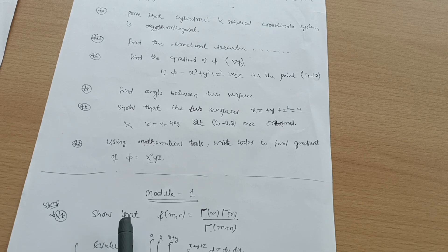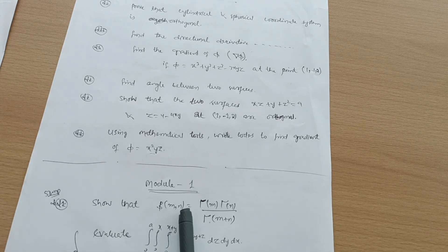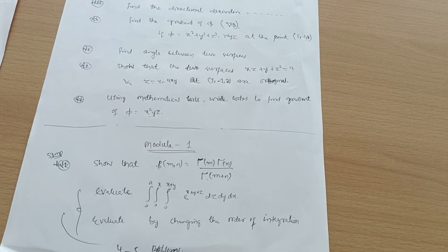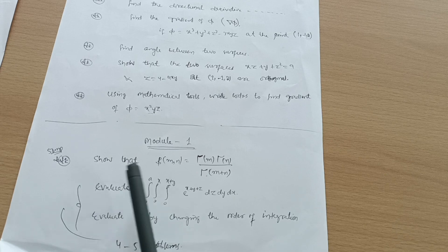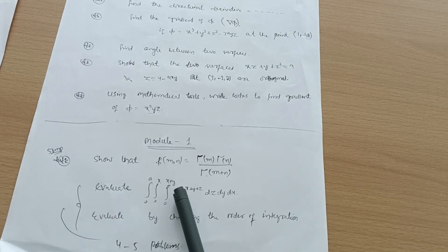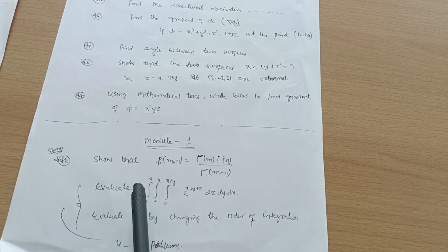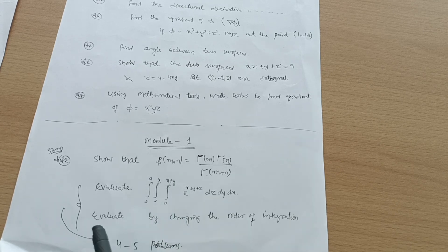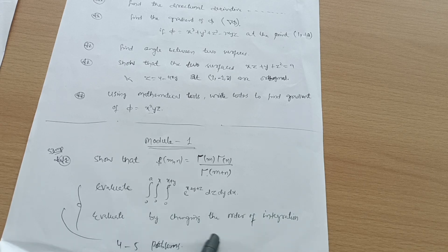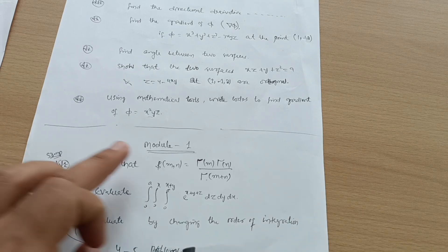Next is Module 1, which is somewhat more difficult than the three modules discussed so far. The super important question here is the derivation of the beta-gamma function: show that beta(m, n) equals gamma(m) times gamma(n) divided by gamma(m + n). Also cover triple integration and double integration — practice four problems from each concept if you are comfortable. If not comfortable with integration, you can skip those topics. To score, evaluate triple integrals such as the integral of e to the power (x + y + z) dz dy dx with given limits, and evaluate by changing the order of integration.